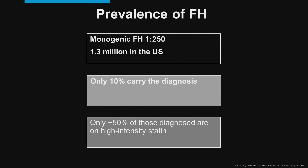The prevalence of FH is relatively high for a genetic disorder. It's estimated that one in 250 individuals have a monogenic form of FH, and as a result, there are 1.3 million estimated FH patients in the U.S. Unfortunately, only 10 percent of these are estimated to have a diagnosis of FH, meaning 90 percent are without this diagnosis and potentially not treated.